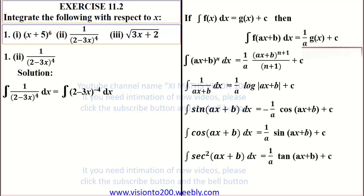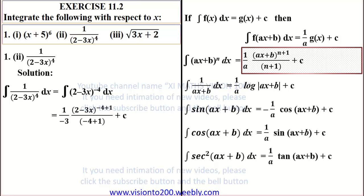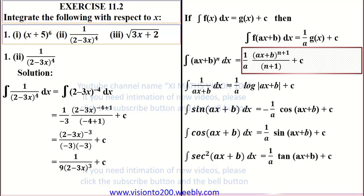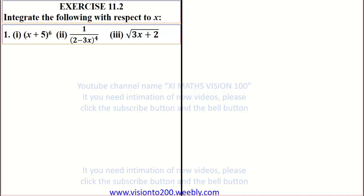Applying the formula: 1 by A into (AX plus B) whole power N plus 1, divided by N plus 1, plus C. Here A is equal to minus 3. The result is (2 minus 3X) whole power minus 3, divided by minus 3 into minus 3, which equals 1 by 9 into (2 minus 3X) whole power minus 3 plus C, or equivalently 1 by 9 into 1 by (2 minus 3X) whole power 3 plus C.